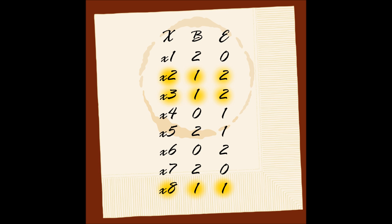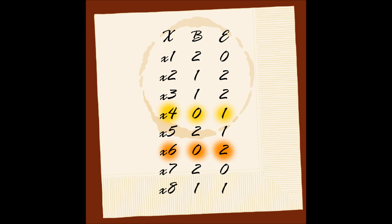Looking at tuples where B equals 1, we cannot make any consistent rules either. In tuples X2 and X3, B1 implies E2, while in tuple X8, B1 implies E1. For B equals 0, there is still inconsistency — in X4, B0 implies E1, and in X6, B0 implies E2. We cannot make any certain rules using B alone. In order to resolve these inconsistencies, we begin adding back attributes one at a time.